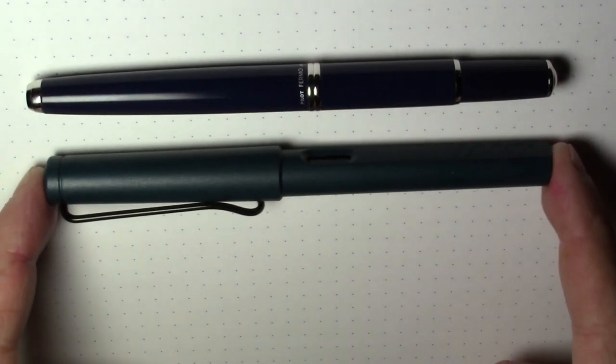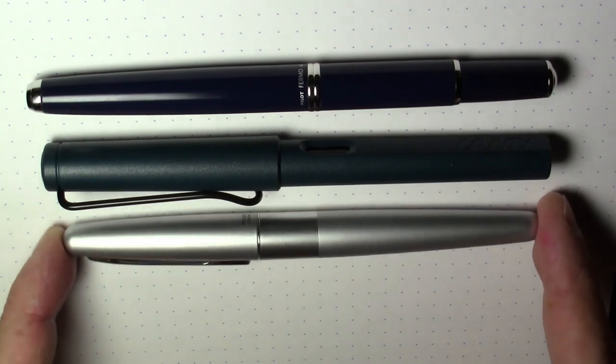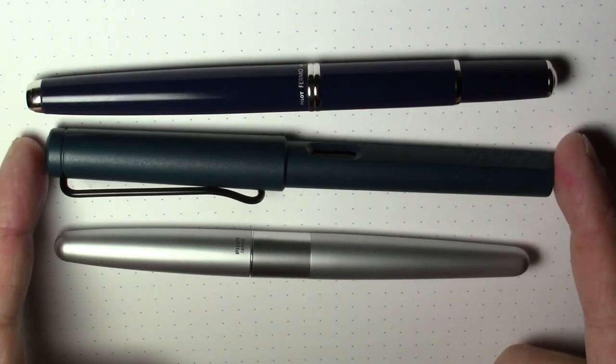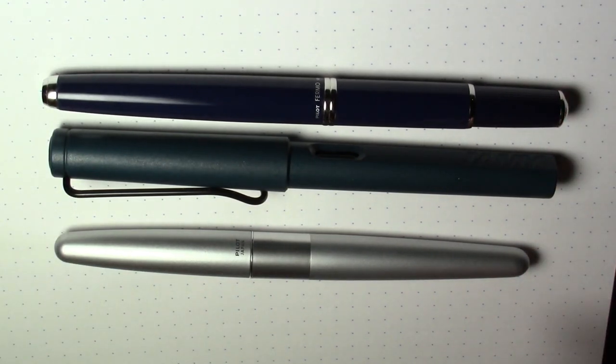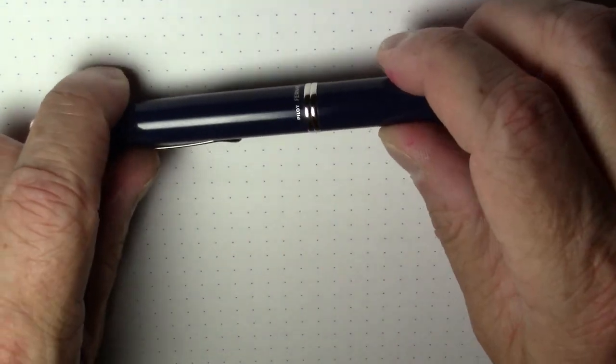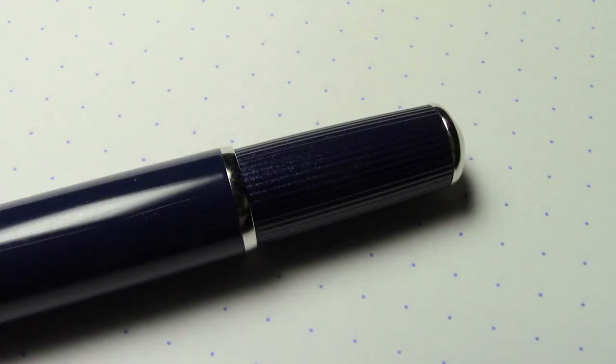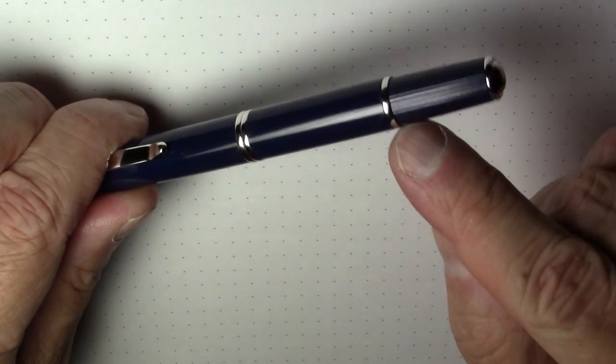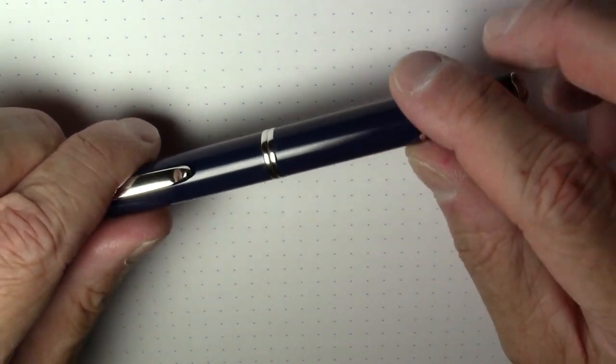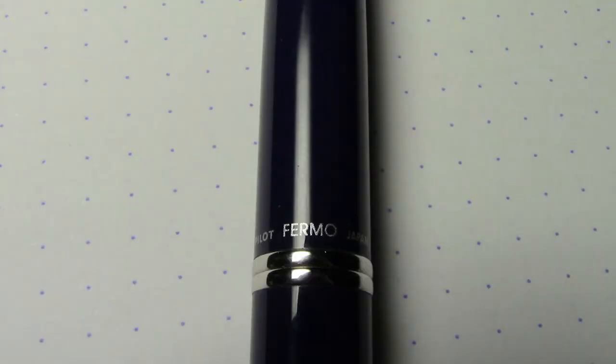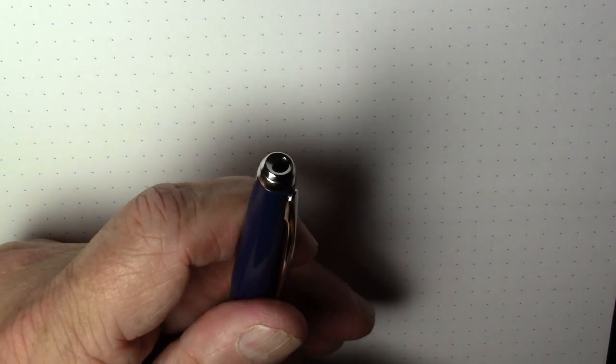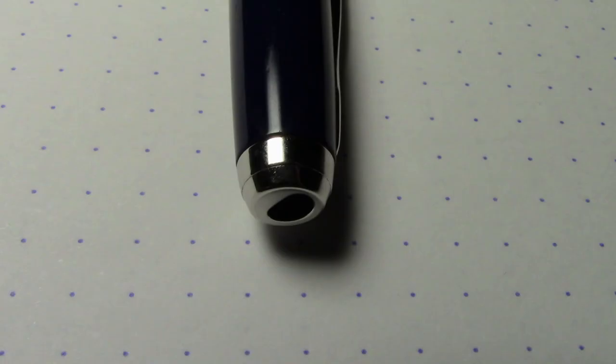In terms of size, here it is compared to a Lamy Safari and here it is compared to a Pilot Metropolitan. As you can see it's pretty much right in the ballpark size-wise of these very popular pens. This is a blue lacquered colored one. The twist to turn knob has a nice textured knurling on it where you can grip to turn. It's got nice chrome trim and a chrome finial on the end. Where the section and the body meet are also chrome trimmed. The clip is all chrome and the end where the point extends from is also chrome.